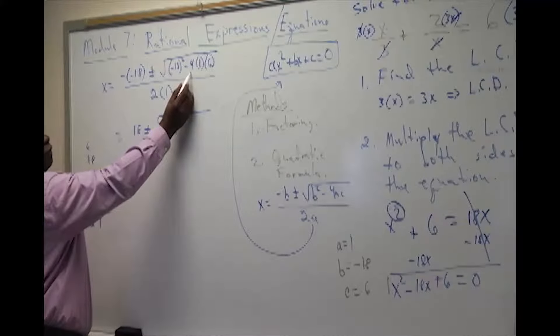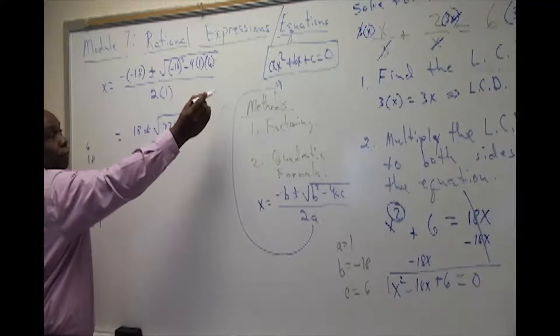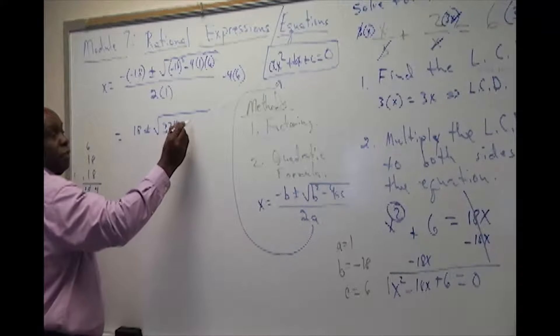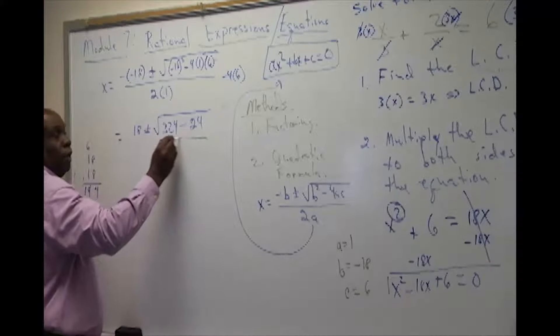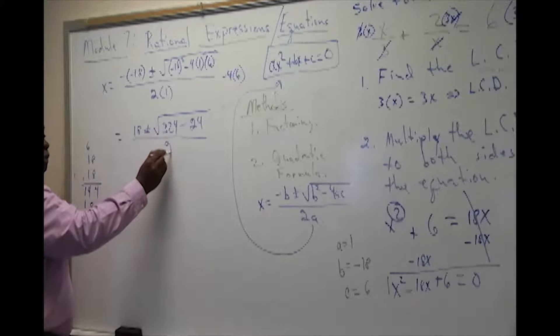We multiply here from left to right. We have negative 4 times 1 will give us negative 4, and negative 4 times 6. And negative 4 times 6 will give us negative 24. And that should be all over 2 times 1, which is 2.